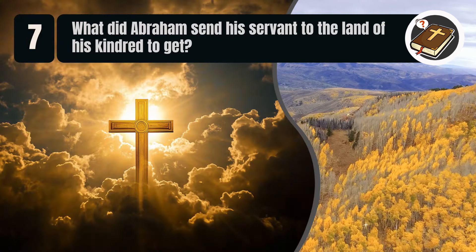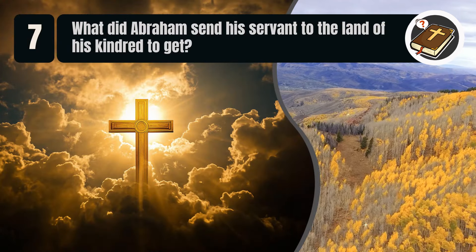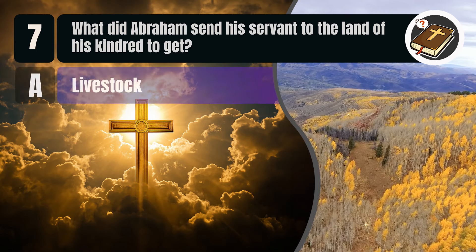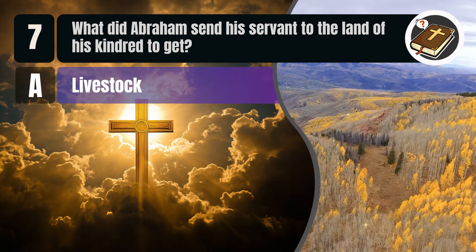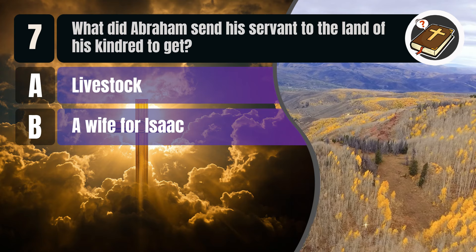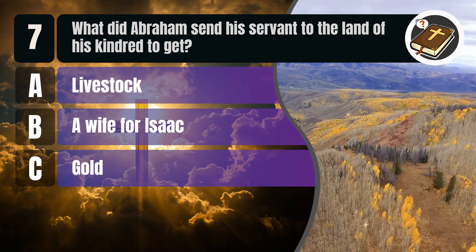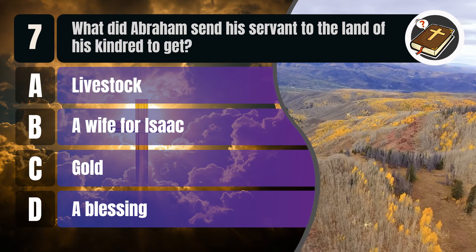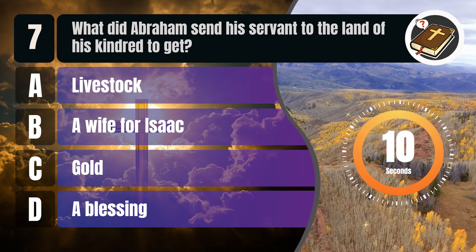Question 7. What did Abraham send his servant to the land of his kindred to get? A. Livestock. B. A wife for Isaac. C. Gold. D. A blessing.